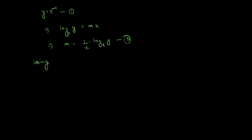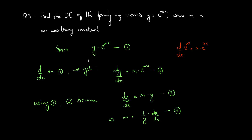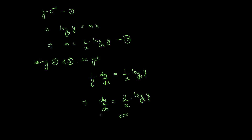Using equations 4 and 5, equating them: 1 by y into dy by dx equal to 1 by x into log y to the base e. Rearranging, dy by dx equal to y by x into log y to the base e. This is the required differential equation — the solution to question number 3. We have successfully eliminated the arbitrary constant m from the family of curves y equal to e raised to mx.